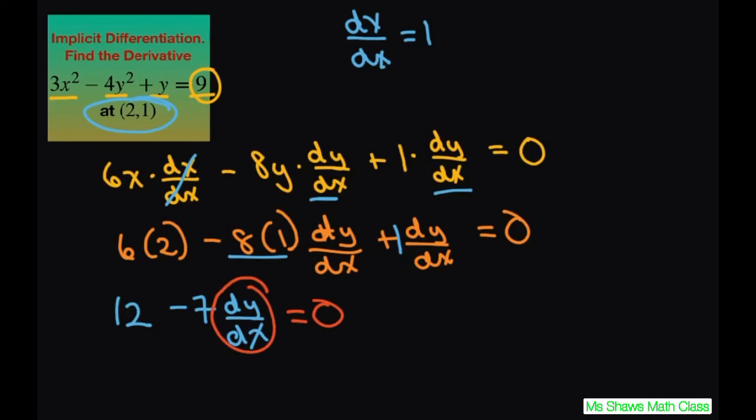Subtract the 12, and when you do that you get negative 7 dy/dx equals negative 12. Divide both sides by negative 7. Two negatives make a positive, so dy/dx equals 12/7.